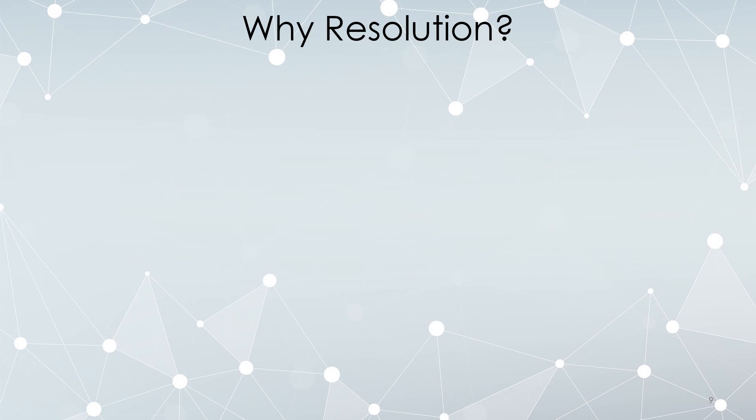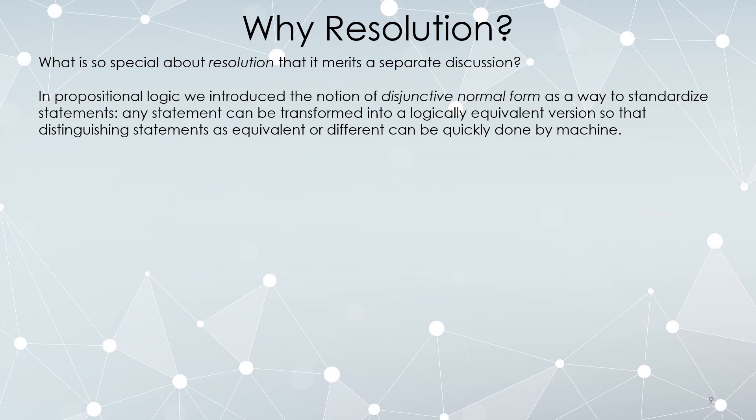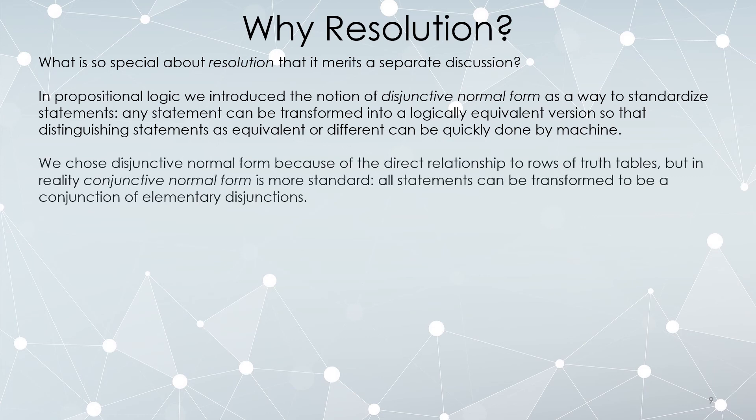So why are we taking a separate video just to talk about resolution? In propositional logic, we had disjunctive normal form, where we talked about this as a way to standardize how statements are presented. Any statement can be transformed into a logically equivalent version so that distinguishing statements as logically equivalent or not is easily done just by comparing a list of symbols. We talked about disjunctive normal form because it was easy to relate it to a truth table. In reality, there's something very similar called conjunctive normal form that's a bit more standard. So instead of talking about disjunctions of elementary conjunctions, that's disjunctive normal form. Conjunctive normal form is a conjunction of elementary disjunctions.